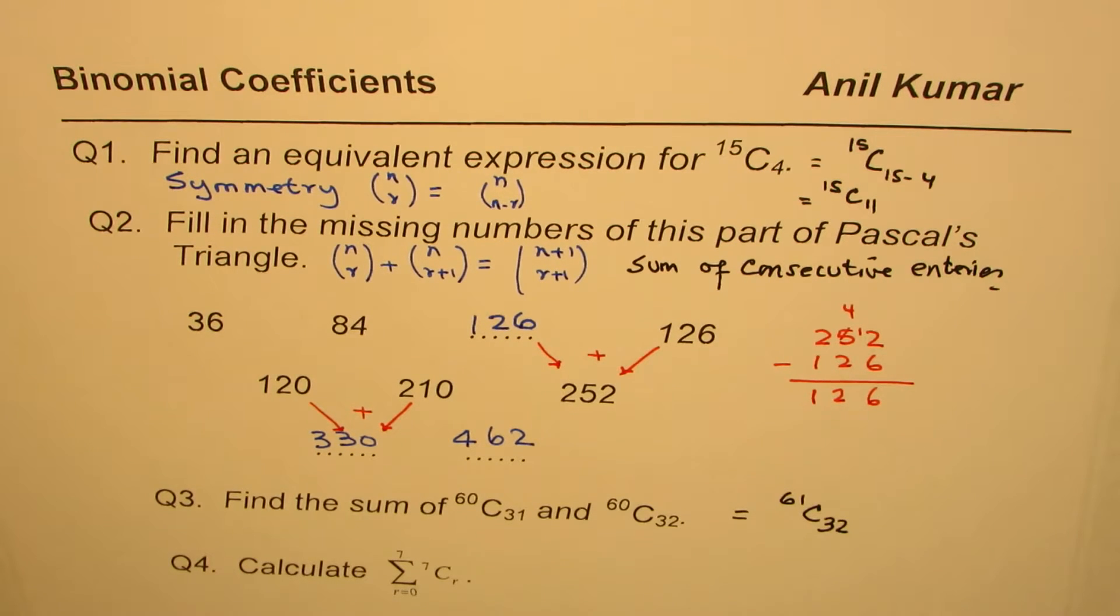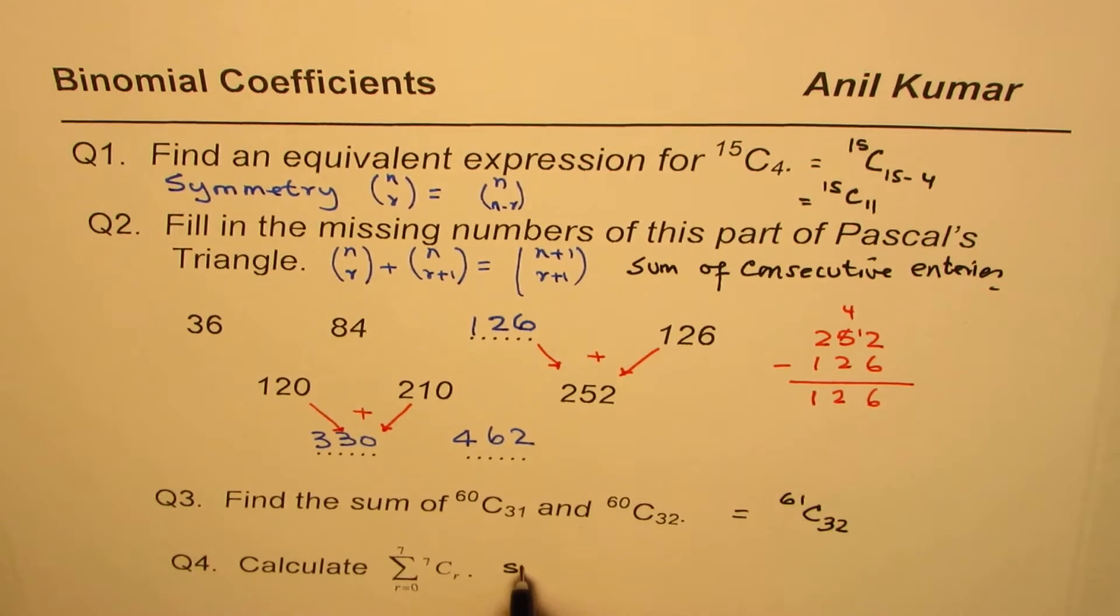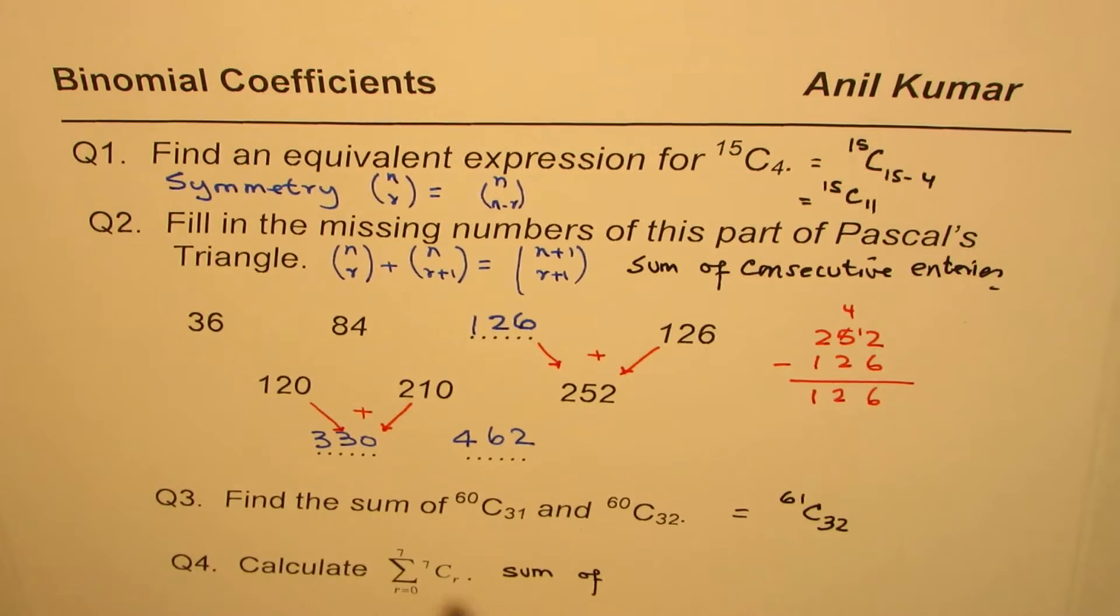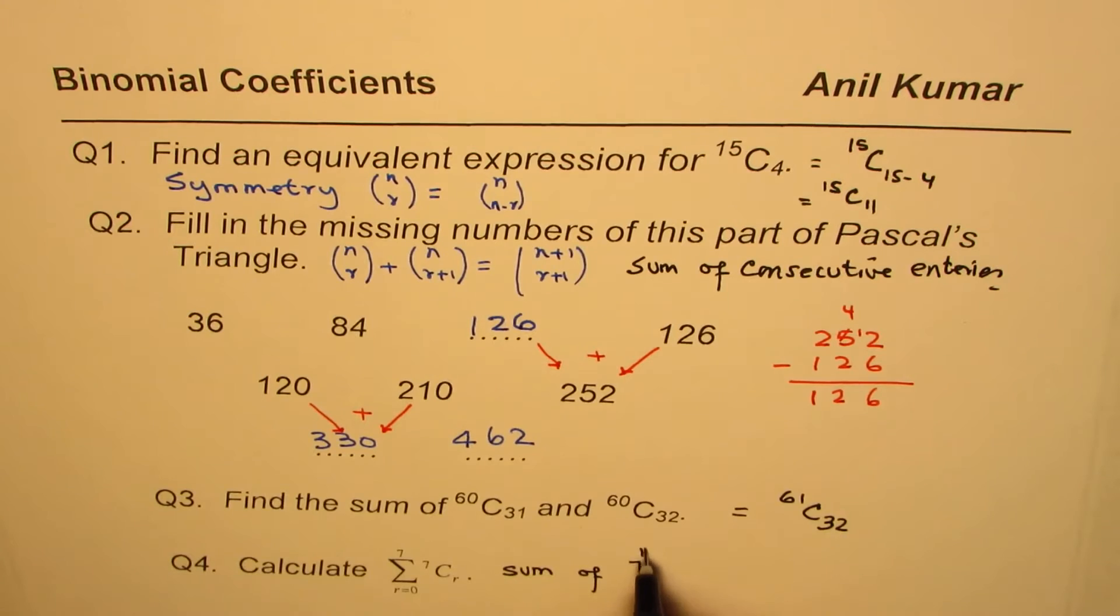Question number four here is calculate the summation of 7 choose r, where r changes from 0 to 7. So that is the sum of all the coefficients in the 7th row. This is sum of entries, you can say sum of 7th row entries of Pascal's triangle.